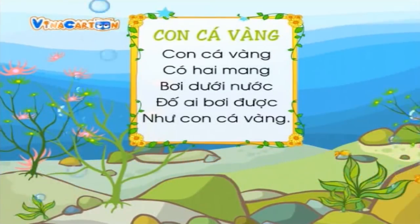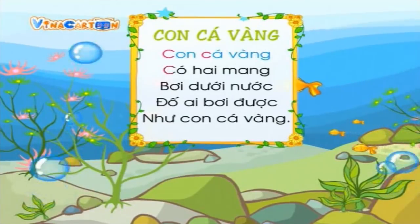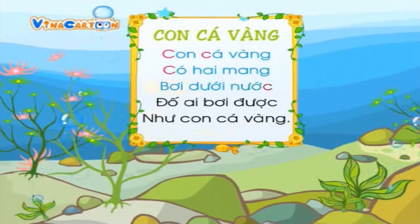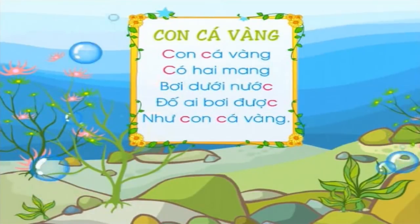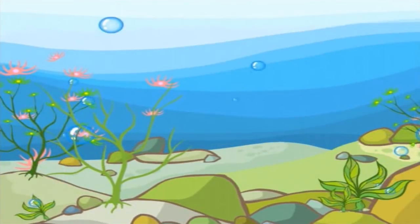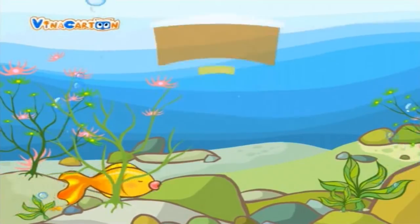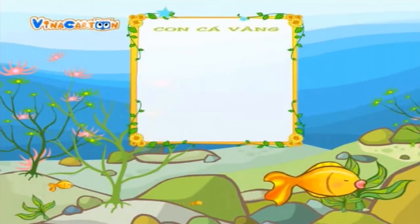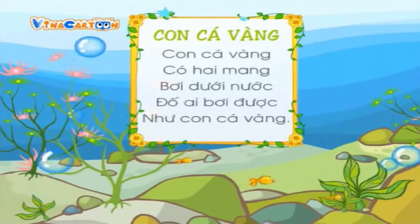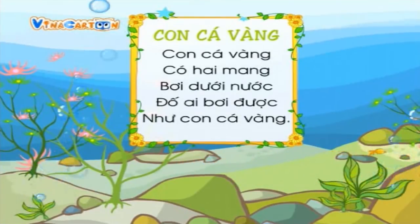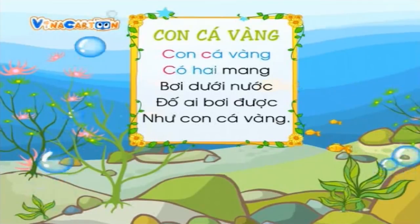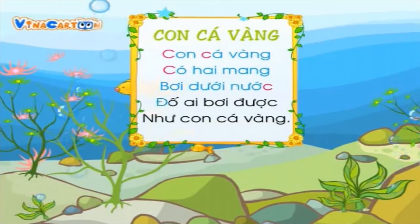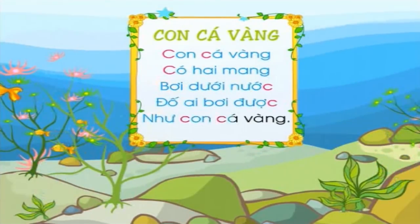Bài thơ Con cá vàng: Con cá vàng có hai mang bơi dưới nước, đấu ai bơi được như con cá vàng.